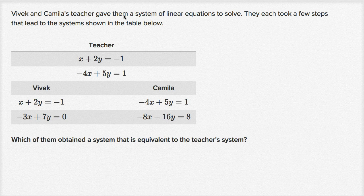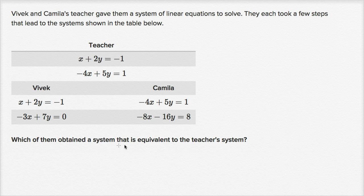Vivek and Kamala's teacher gave them a system of linear equations to solve. They each took a few steps that led to the systems shown in the table below. We have the teacher's original system, what Vivek got after doing some operations, and what Kamala got after doing some operations. Which of them obtained a system that is equivalent to the teacher's system?